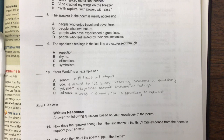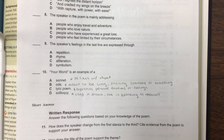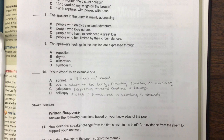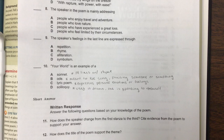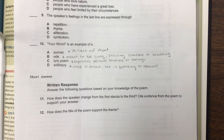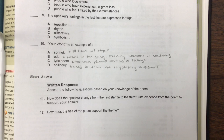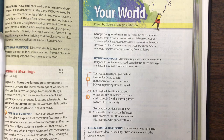Number ten: "Your World" is an example of a — I went ahead and wrote the definitions because I know we haven't worked with too many poems. A sonnet is a 14-line poem that rhymes. An ode is meant to be sung and usually praises someone or something. A lyric poem expresses personal emotions or feelings. And a soliloquy is used in a drama where one person is speaking to themselves. Then you're going to answer numbers 11 and 12 — remember, two sentences each, guys. Number 11: How does the speaker change from the first stanza to the third? Cite evidence from the poem to support your answer. And 12: How does the title of the poem support the theme? When you're all done, put it somewhere safe so your parents can bring it back on Friday.